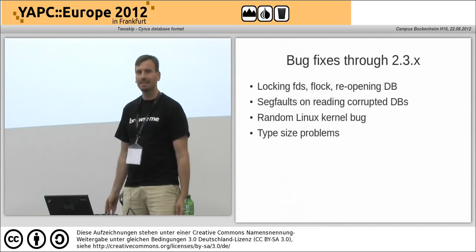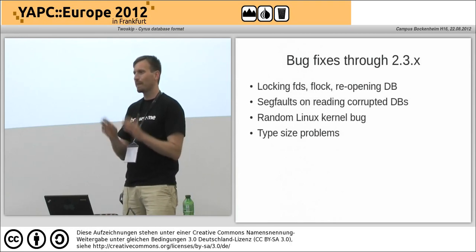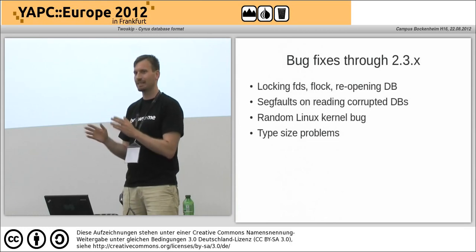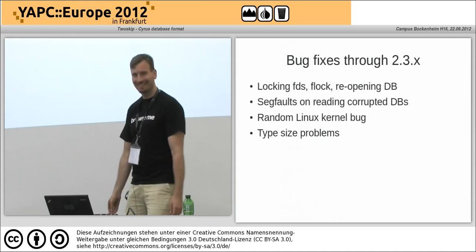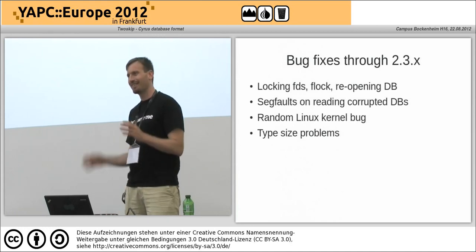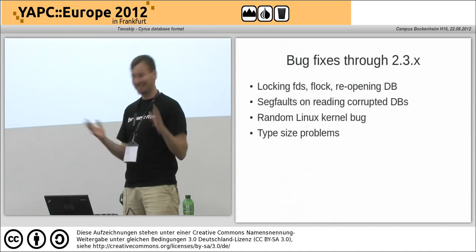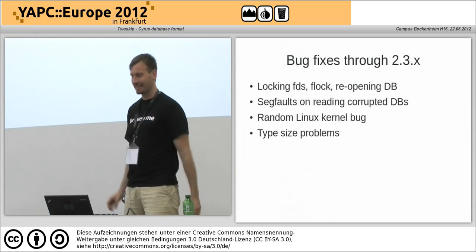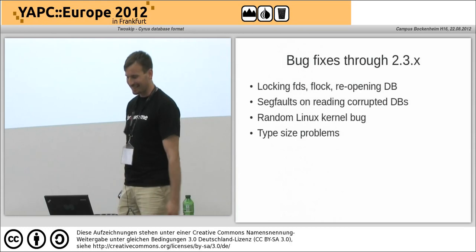There was a random Linux kernel bug — 64-bit kernels — where mmap reads over a page fault would return early to userland and you would read 8 to 16 bytes of zeros, randomly, in the middle of your mmap file. 64-bit only, for around about 5 kernel revisions. It took me a week of debugging, and finally I got a test case I could send, and within 10 minutes Linus had jumped on it, found out who was responsible, and it was fixed a day later.